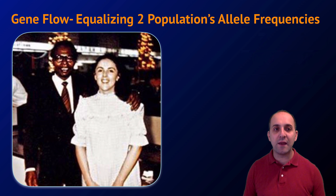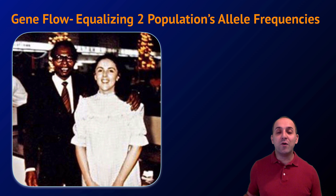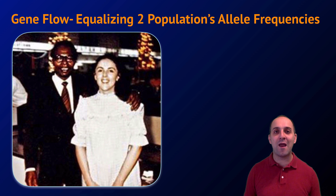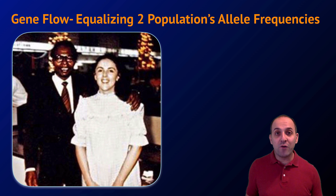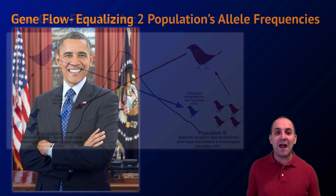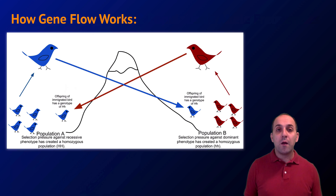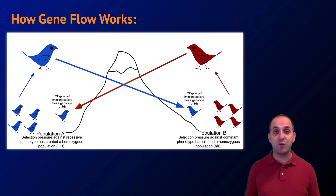The last evolutionary force is gene flow, which equalizes allele frequencies between two different populations. A great example is the equalization of allele frequencies in the modern human population as historically isolated groups have come into contact and reproduced with each other. As individuals from different populations interact, they bring their alleles along. Generally speaking, gene flow will tend to have an equalizing effect on any differences in allele frequencies between any two populations.